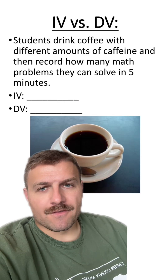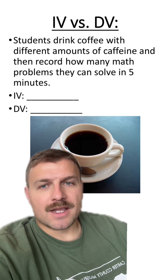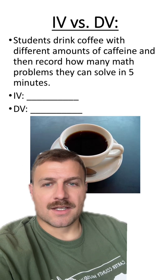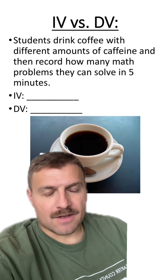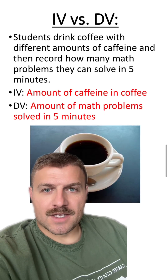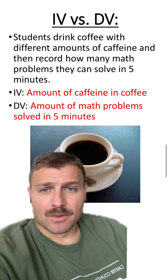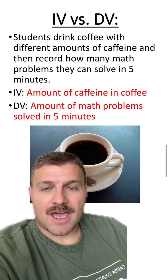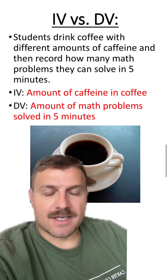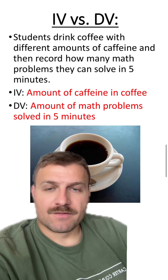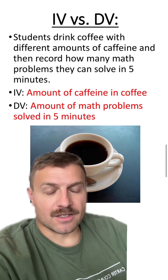Next scenario: students drink coffee with different amounts of caffeine, then record how many math problems they can solve in five minutes. The independent variable is the amount of caffeine in the coffee, while the dependent variable is the amount of math problems they can solve in five minutes. You can say it like this: the amount of math problems solved in five minutes depends on the amount of caffeine in the coffee.